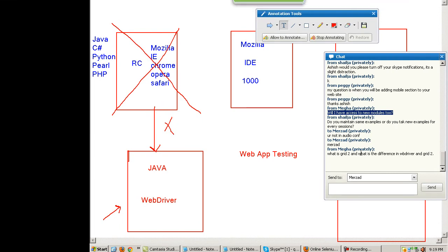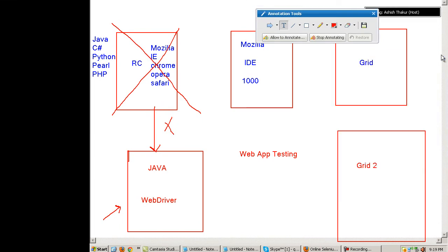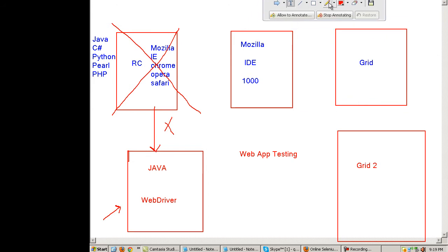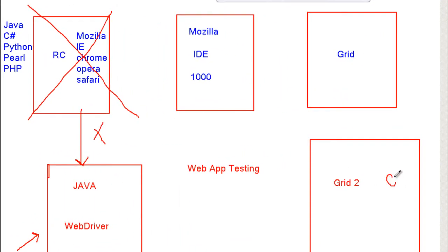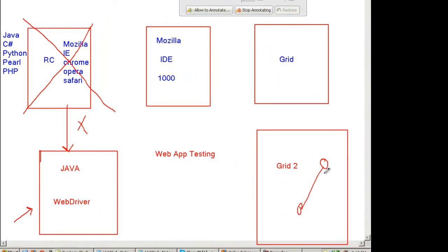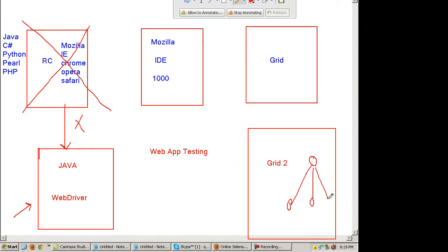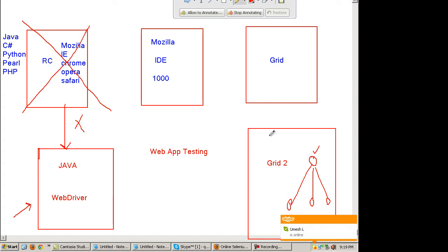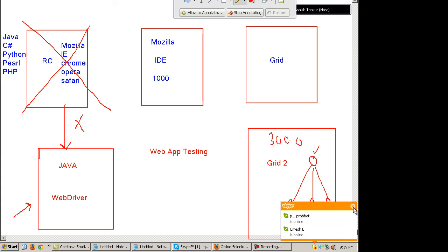Question: What is Grid 2 and what is the difference between WebDriver and Grid 2? Grid is something which helps you to run your test cases in parallel. In Grid you set up a hub - the hub is like a central PC - and you connect multiple PCs to it. Suppose you have 3000 test cases, then you can distribute these test cases among multiple machines and execute them in parallel.